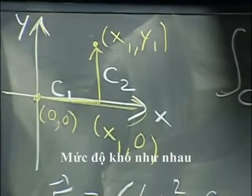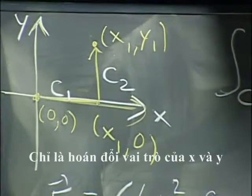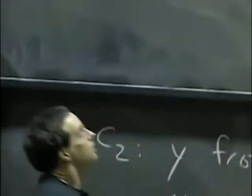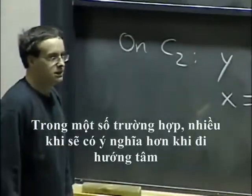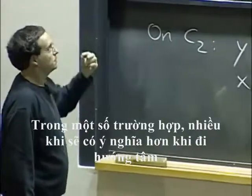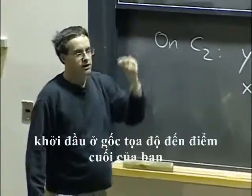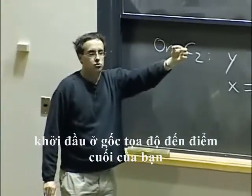And that's the same level of difficulty. You just exchange the roles of x and y. In some cases, it's actually even making more sense maybe to go radially straight out from the origin to your endpoint.